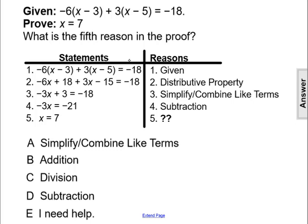We already have the first four statements and four reasons in the proof, and we've now added the fifth statement that x equals 7. And as you can see, that's actually what we were trying to prove.